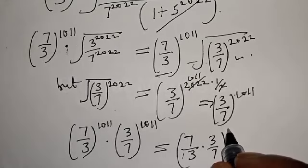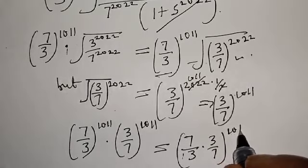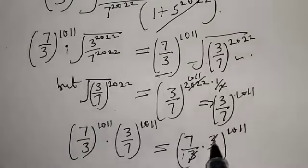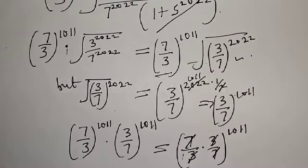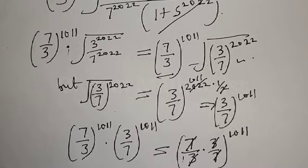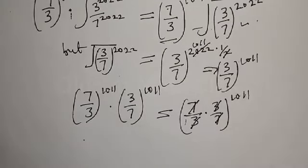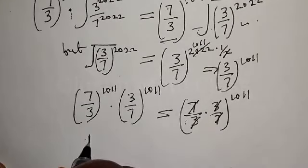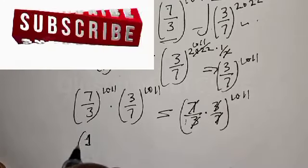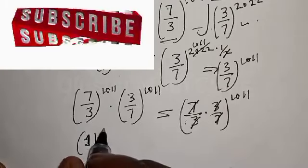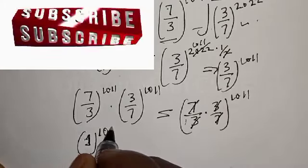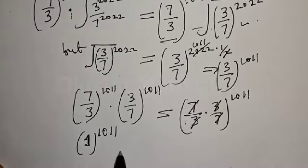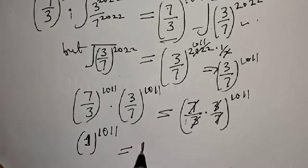The 3s cancel and the 7s cancel, leaving 1 raised to power 1011, which equals 1.